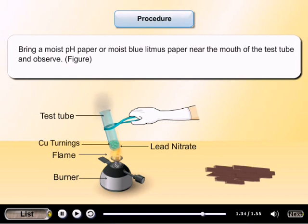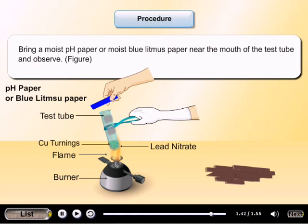Bring a moist pH paper or moist blue litmus paper near the mouth of the test tube and observe. Bring a glowing candle near the mouth of the test tube.